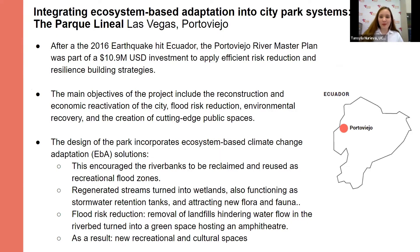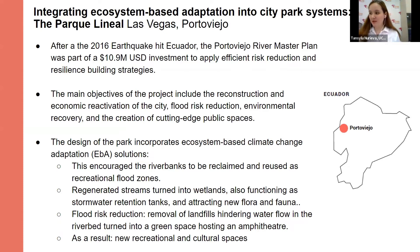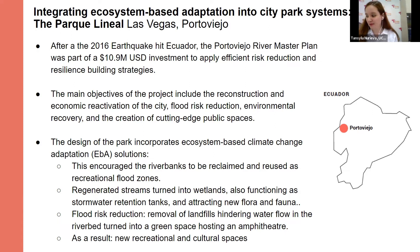As an example, we can see the Lineal Las Vegas Park in the city of Portoviejo, Ecuador. In 2016, there was an earthquake, and before the earthquake, the areas around the Portoviejo River were abandoned and faced degradation. The government implemented, within three years, a project aimed at the integration of ecosystem-based adaptation into city park systems, including reconstruction, economic reactivation, flood risk reduction, environmental recovery, and creation of public spaces incorporating ecosystem-based climate change adaptation solutions.